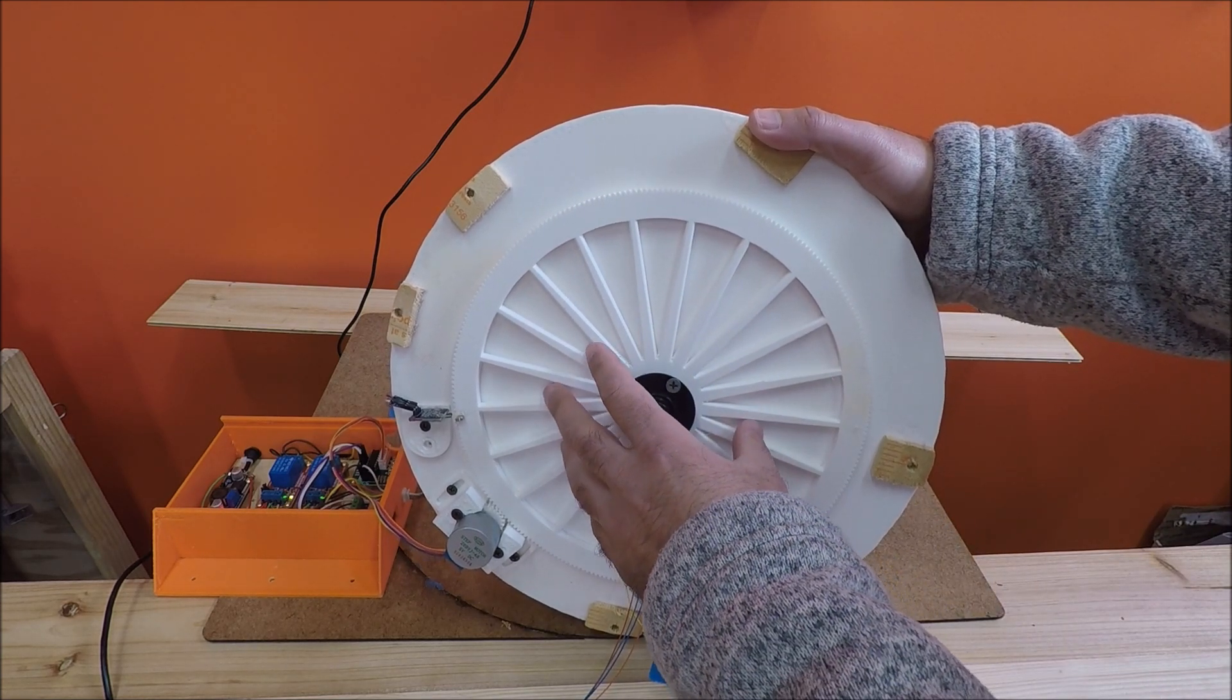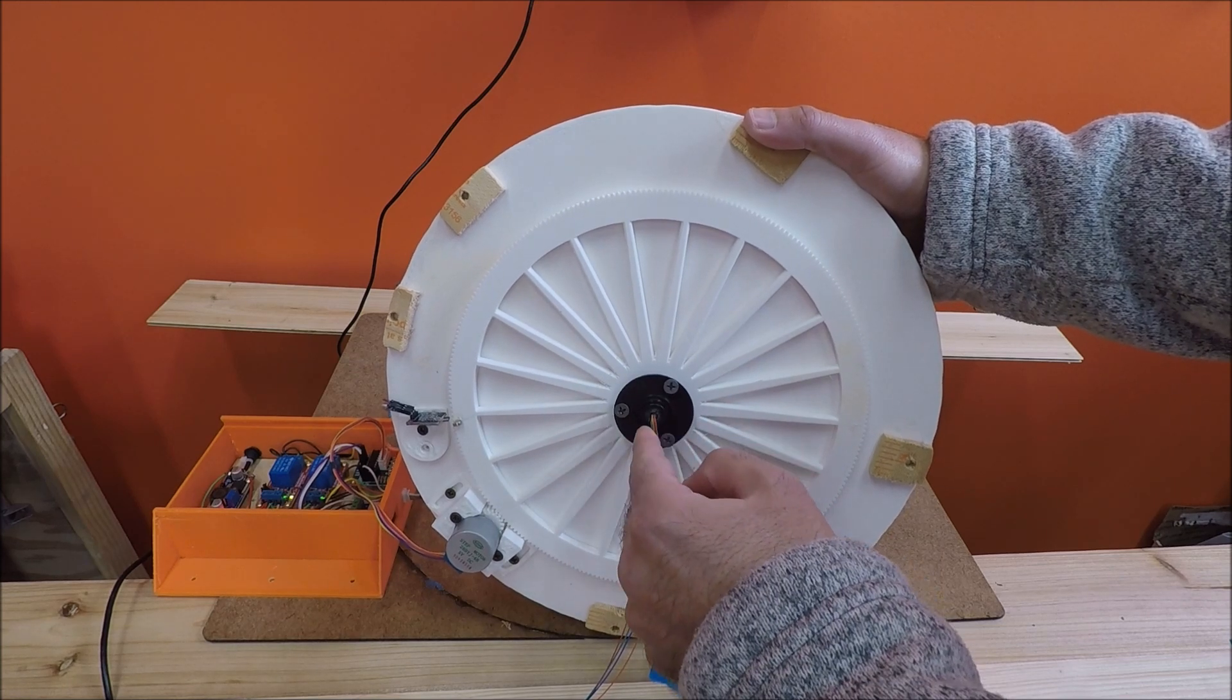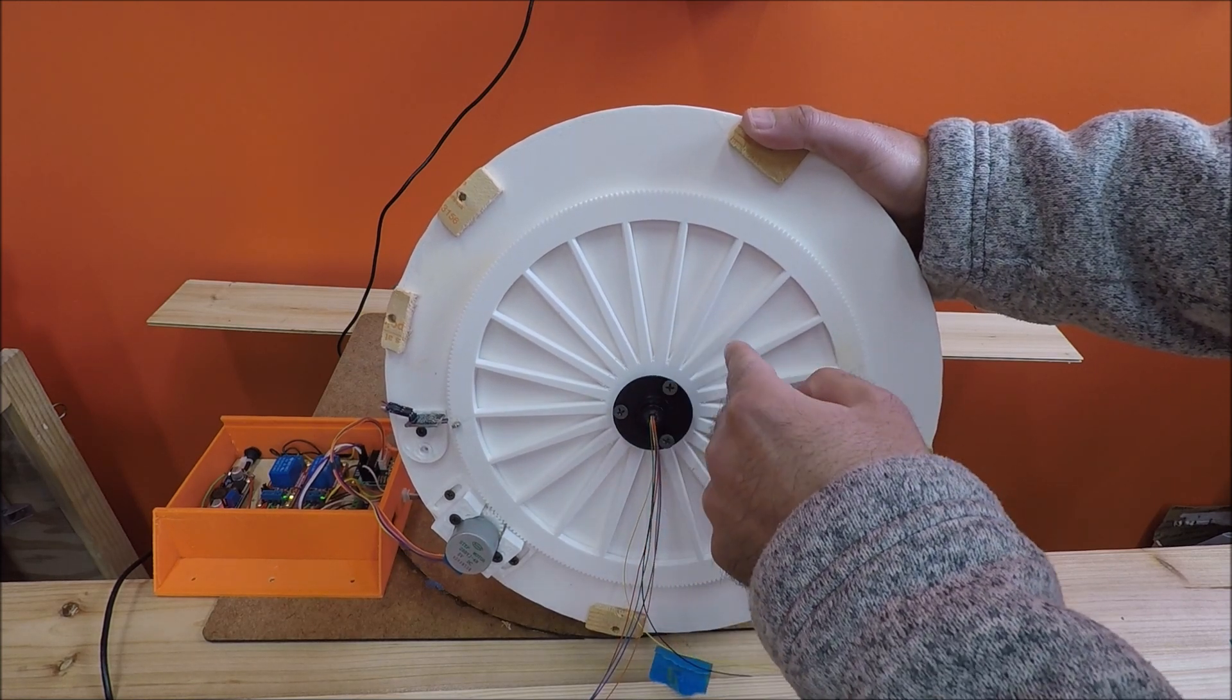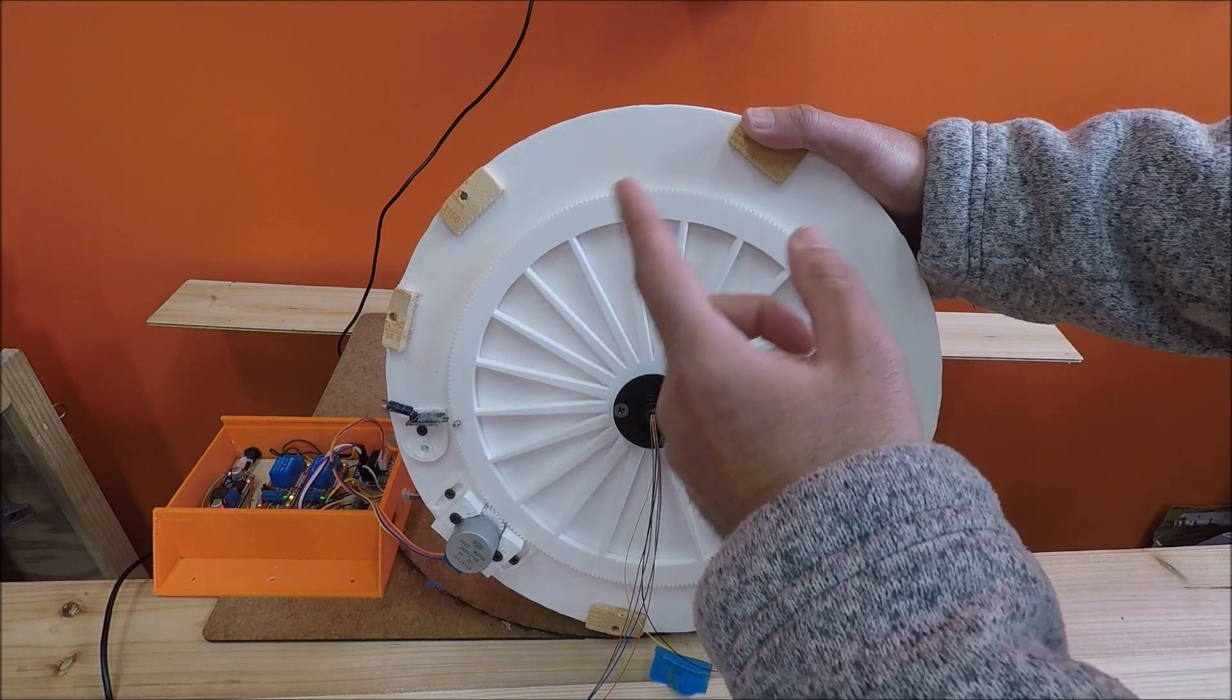What you're seeing here is the bottom of the turntable and this big gear. There's actually a shaft that goes through the middle of this and the turntable is on the other side. So as this big wheel turns, the turntable on the front turns.